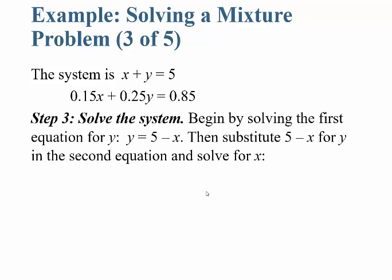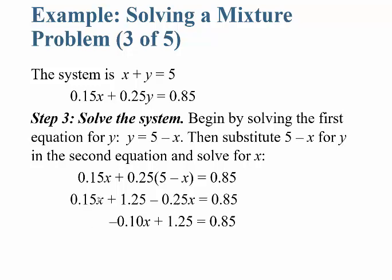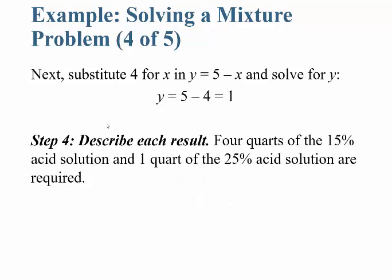Solving with substitution: from equation 1, Y = 5 − X. Substituting into equation 2: 0.15X + 0.25(5 − X) = 0.85. Distributing: 0.15X + 1.25 − 0.25X = 0.85, so −0.10X = −0.40, giving X = 4. Then Y = 5 − 4 = 1. So the chemist needs four quarts of the 15% acid solution and one quart of the 25% acid solution to produce five quarts of a 17% solution.